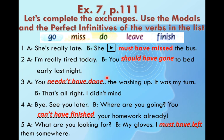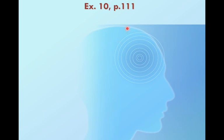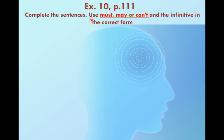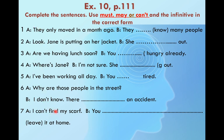Next: exercise number ten, page 111. We have to complete the sentences using must, may, or can't and the infinitive in the correct form. To choose the right modal verb, we need to read the context carefully. Must — a rule or 100% certainty. May — possibility or asking permission. Can't — inability or 'it can't be'.